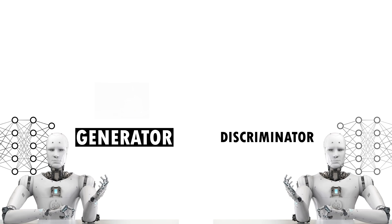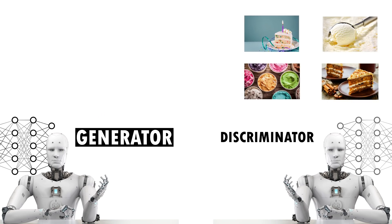The generator produces an image from random noise trying to fool the discriminator. Then the image, along with a stream of real images, is sent to the discriminator which predicts the probabilities of the images being real or fake. Whenever the generator creates an image that the discriminator identifies as fake, it learns from the failure and generates more realistic images.